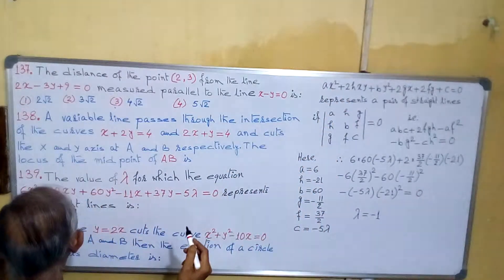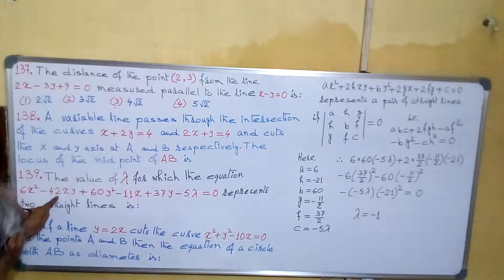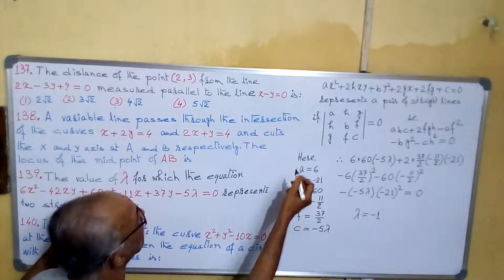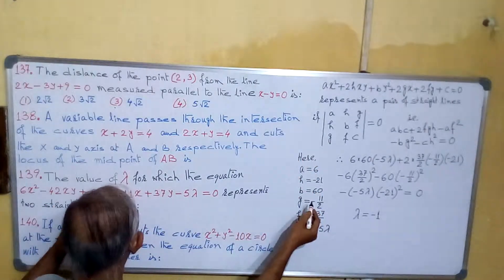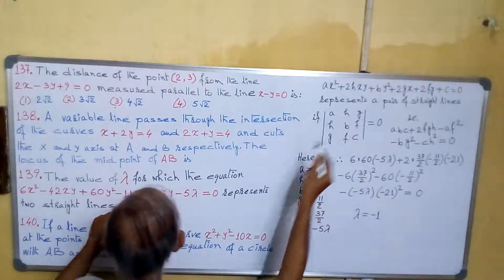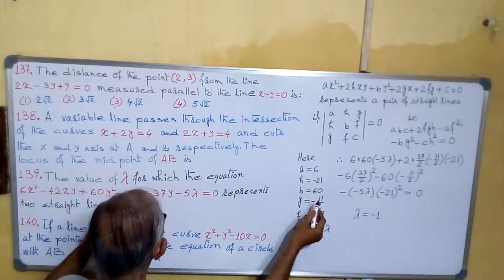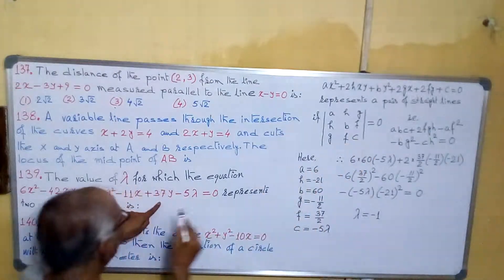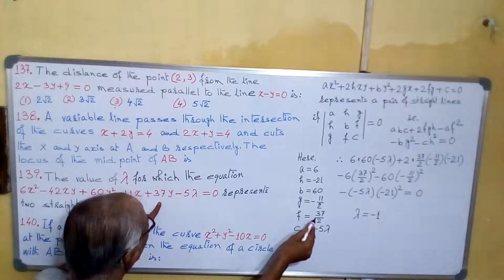we have a equals to 6, 2h equals to minus 42, so h equals to minus 21. b equals to 60. 2g equals to minus 11, that is g equals to minus 11 by 2. So h equals to minus 2.